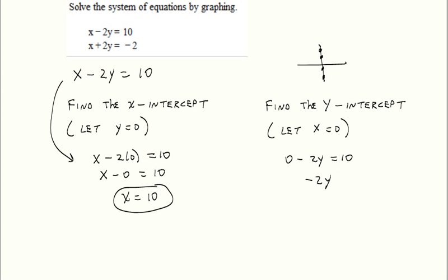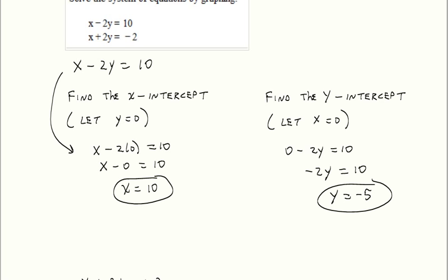Well, that gives us negative 2y equals 10. Divide both sides by negative 2, we get y equals negative 5. So now we know that this graph crosses the x-axis at 10 and the y-axis at negative 5.